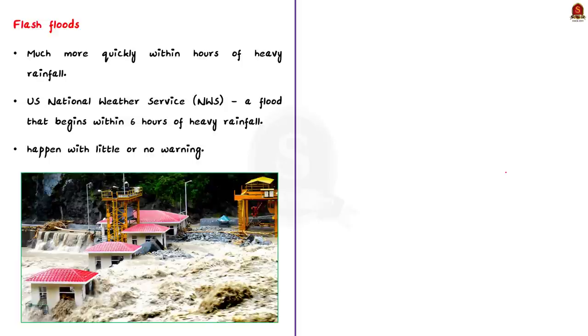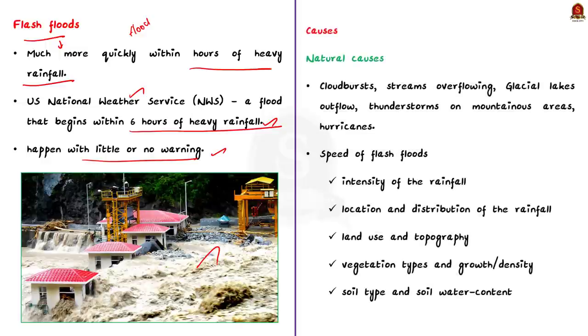Now, let us start the discussion by knowing some basic information about floods. Typically flooding occurs after days of heavy or continuous rainfall. However, flash floods can occur much quickly, sometimes within hours of heavy rainfall. According to the US National Weather Service, flash flood is defined as a flood that begins within six hours of heavy rainfall. Flash floods are often very dangerous because they can happen with little or no warning. They can also be very restrictive thereby causing widespread damage to property and the infrastructure in the region.